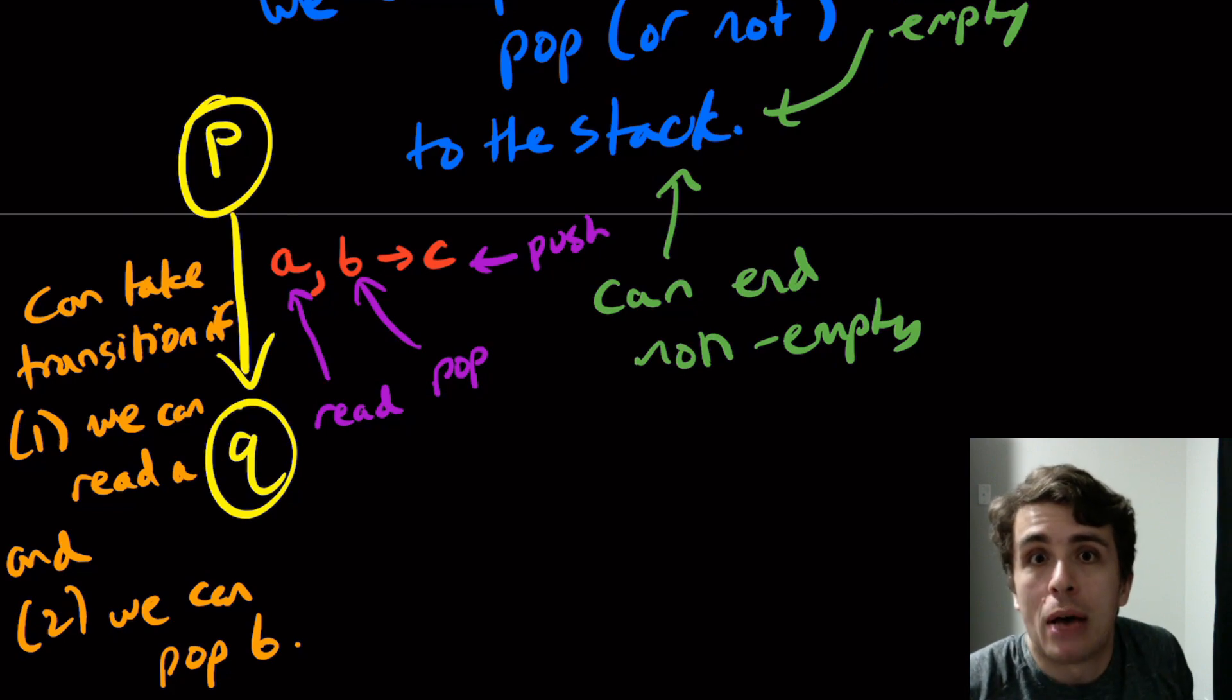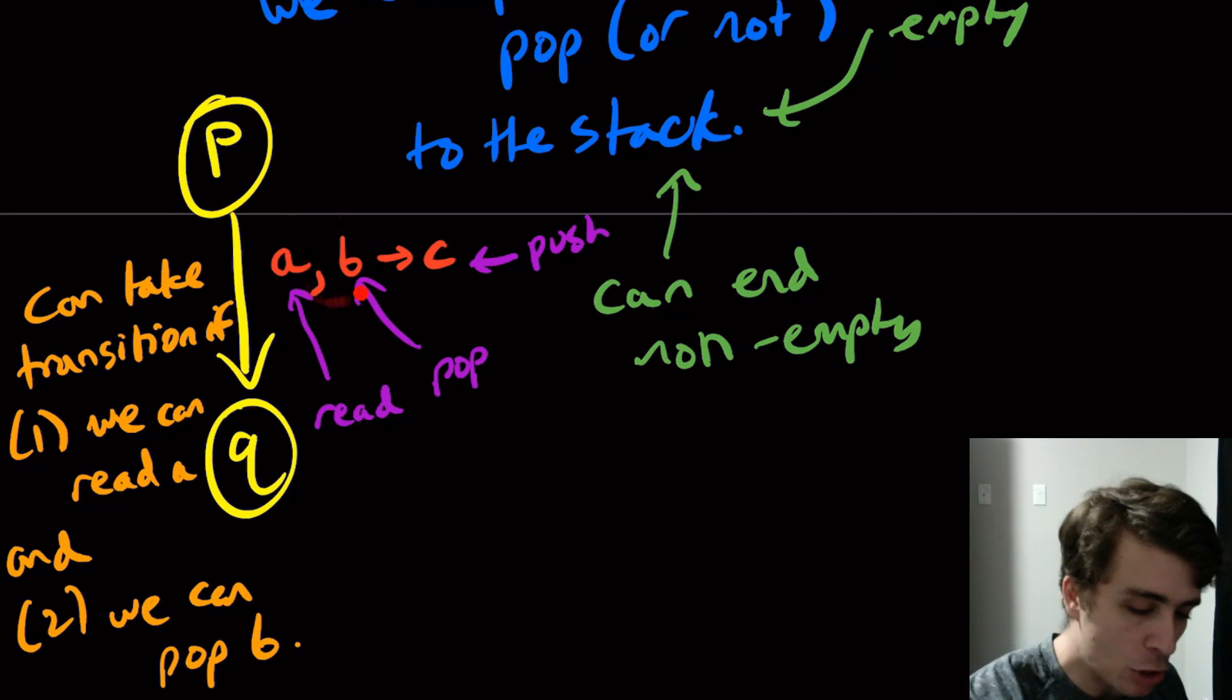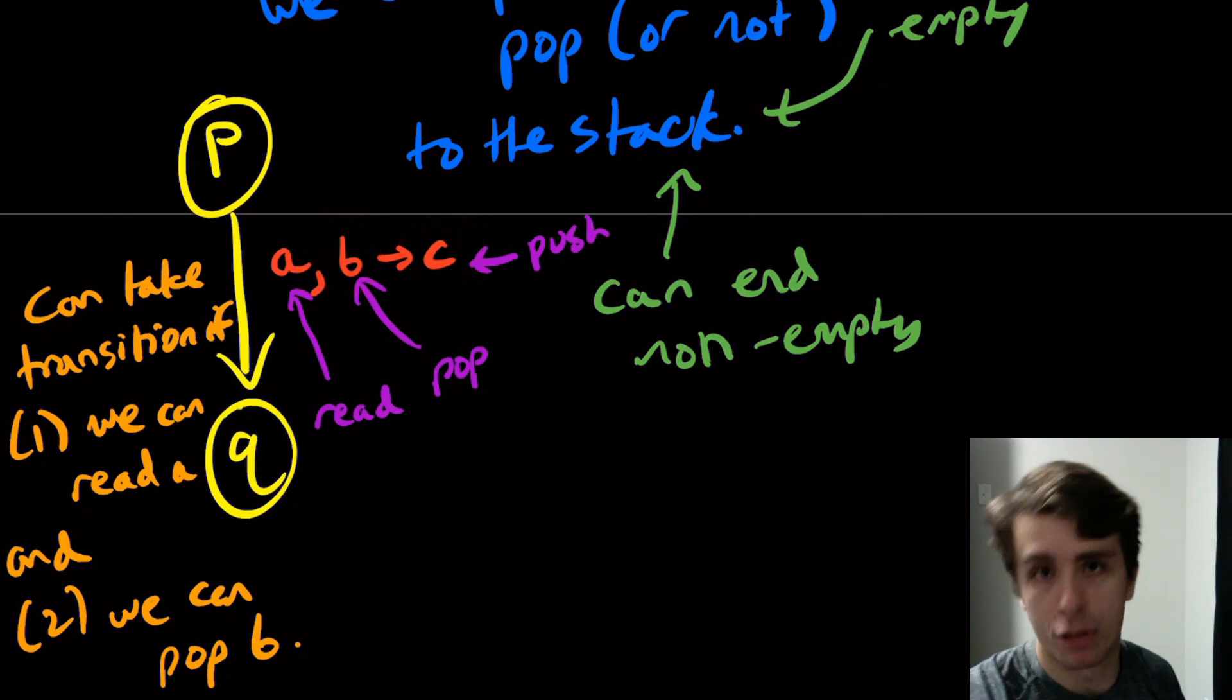And if I wanted to have a transition that didn't touch the stack at all, then I would just set b and c both to be epsilon. So those are epsilon transitions with respect to the stack.